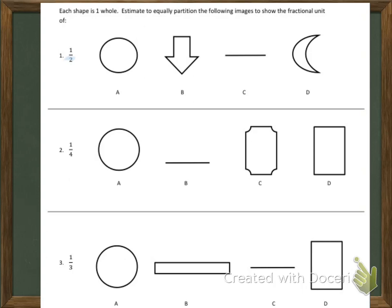Let's start by doing A. When we're doing a fractional unit, we must make sure that both parts are equal. We're going to draw a line right down the middle — but that's not quite equal. Let's try that again. There we go. Now we have two equal parts, so we have two halves.